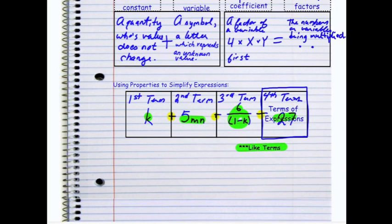Like terms have the same variable. So for example, 2Y and 7Y are like terms. They have the same variable. So when I say I have 2Y and 7Y, I really have 9Y.